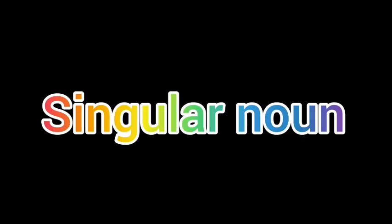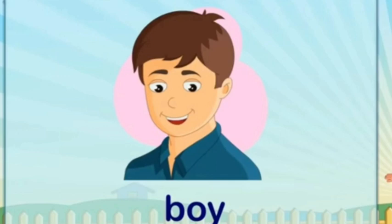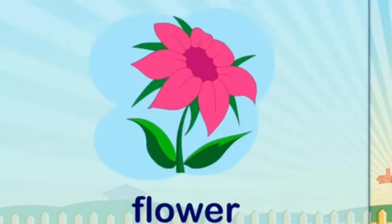Singular noun: a noun that names one person, animal, place, or thing is called a singular noun. For example: a boy, a house, a flower.